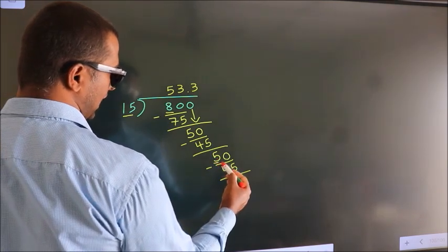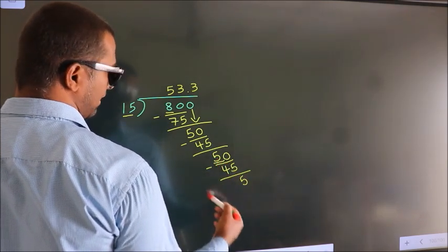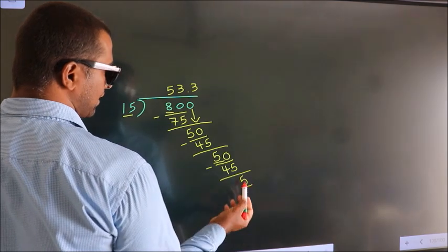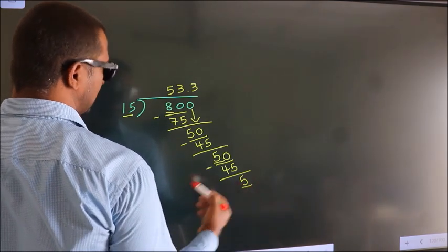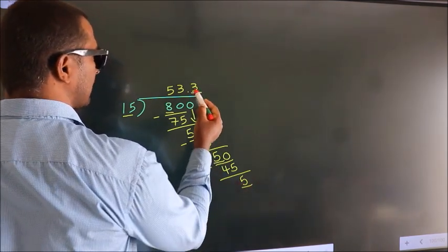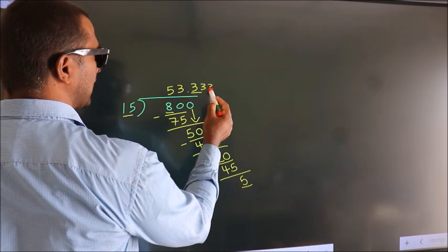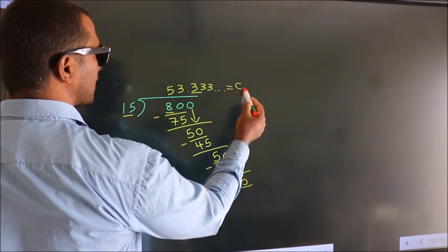Here we had 5 and we got 5 again. That means this number keeps on repeating. So this is our quotient.